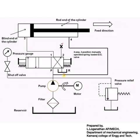The fluid enters into the rod end of the cylinder, which causes the rod end of the cylinder to retract. The fluid in the blind end of the cylinder returns back to the reservoir through port 3 and 1.